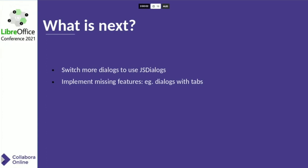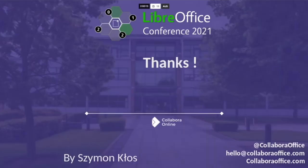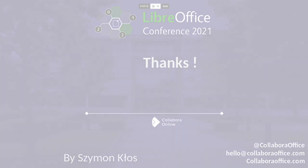JS Dialogs as a framework now looks almost complete. I think only a few small, less important widgets are missing. The next step is to switch all the dialogs in the online to use JS Dialogs instead of pixel-based dialogs. That's all I have for today — thank you very much for listening.